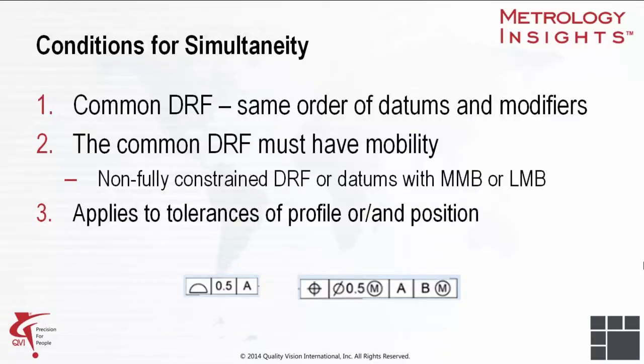Here are the requirements for simultaneity. First, all features must reference the same datum reference frame. Second, the datum reference frame must have mobility. Mobility can be achieved when the datum reference frame is not fully constrained or when the datums are referenced at maximum material boundary or least material boundary. Third, simultaneity applies only to tolerances of profile or tolerances of position.